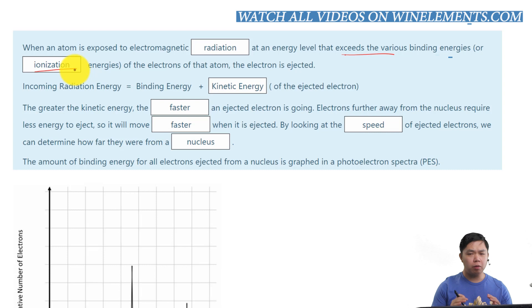Now, this can be formulated into a formula. In this formula, we have the incoming radiation energy, which the electron is being exposed to and absorbs those energy. Of course, every single electron will have a specific binding energy, or ionization energy. If that's the case, what about the leftover energy? The leftover energy is converted into kinetic energy, which the electron will take with them.